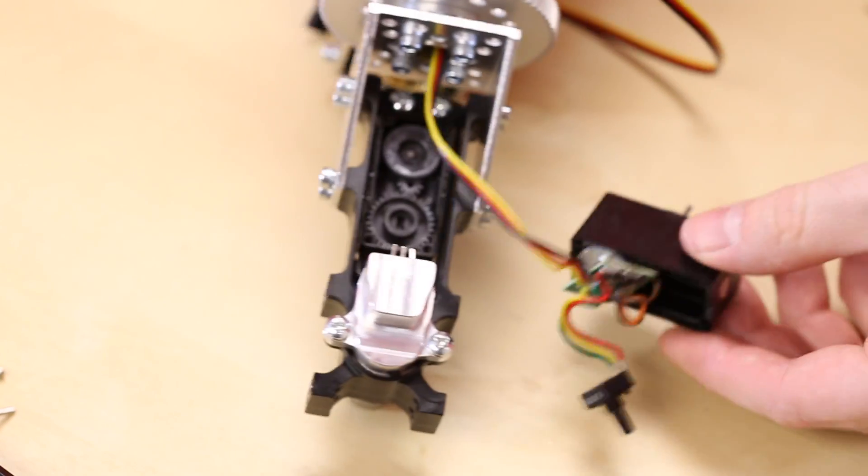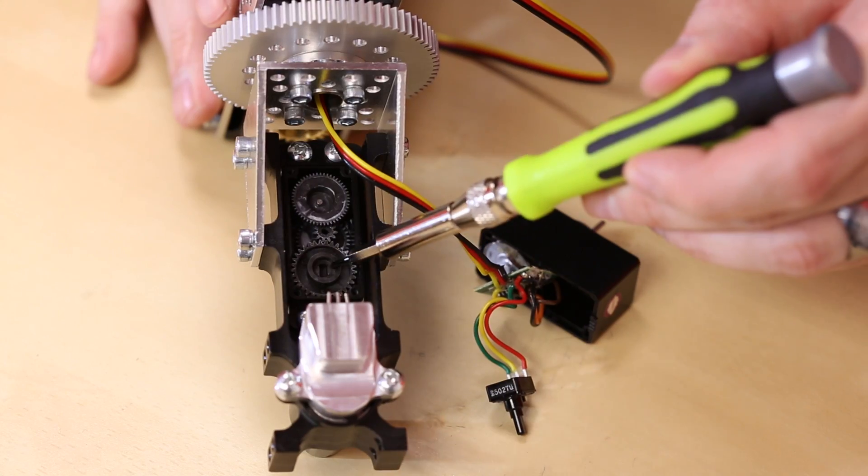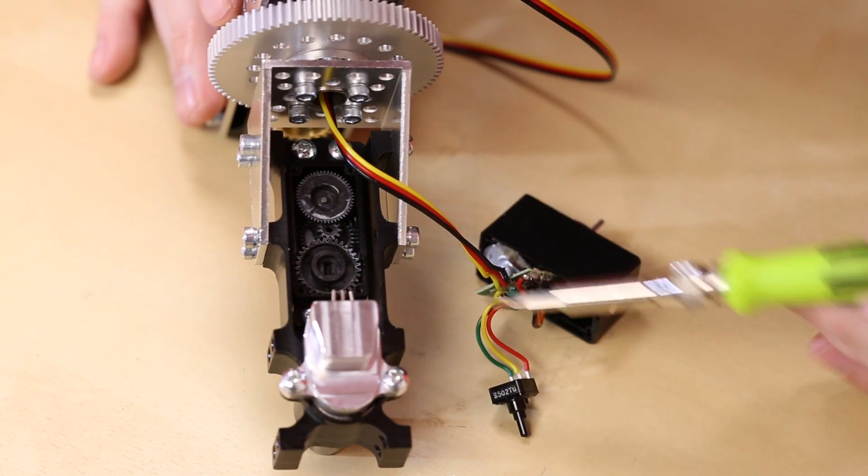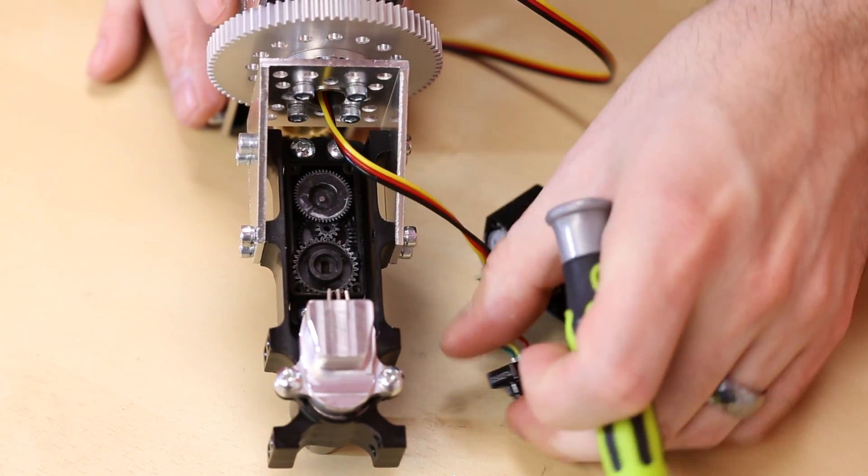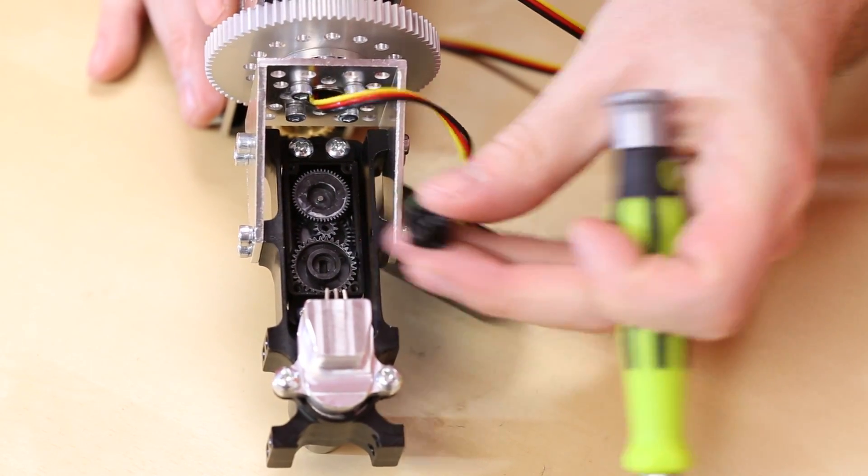From here we can actually remove the whole servo housing. This gear is the final output drive gear. We can see that it has a slot in it which mates up directly with the potentiometer.